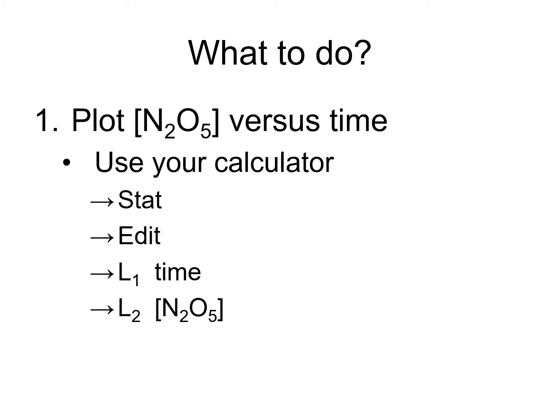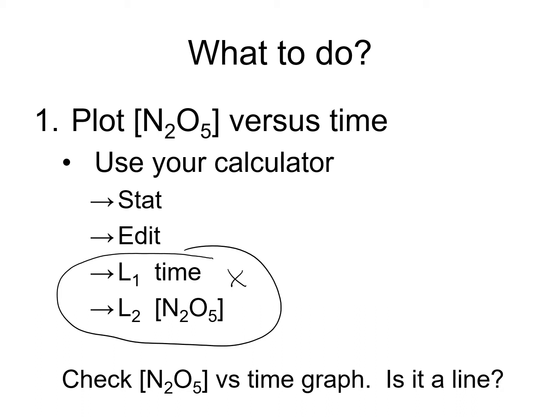The next thing you want to do is check if your graph is a line. You're plotting L1 as your X and L2, the concentration, as your Y. If this is a straight line, you know you have a zero-order reaction. If it's not, that means you want to do another manipulation of your data.